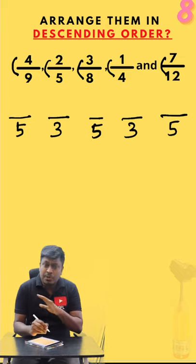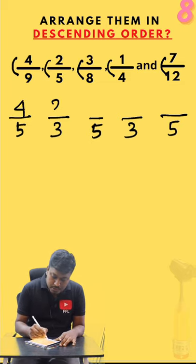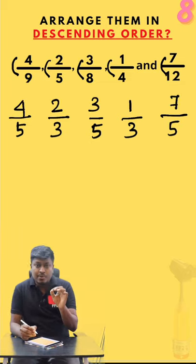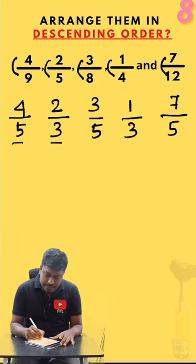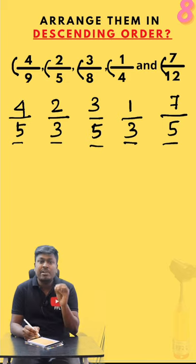Next step, write the numerator as it is: 4, 2, 3, 1, and 7. Now what you need to do is take the LCM for the denominator numbers. 5, 3, 5, 3, 5. The LCM will be 15.